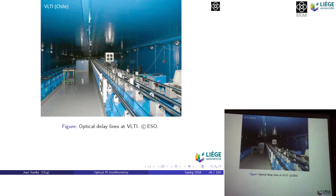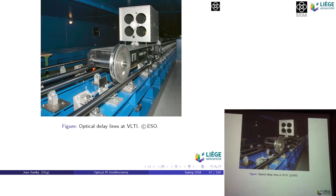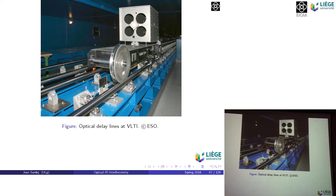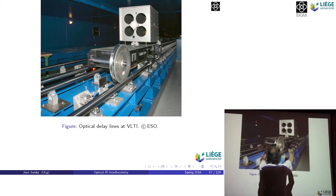Here are the optical delay lines from the VLTI at Cerro Paranal. This is one of those optical delay lines, moving along rails with extremely high precision. Another view shows mirrors inside, with beams being reflected. There are four mirrors for two beams — two beams coming in, going through, and coming back.